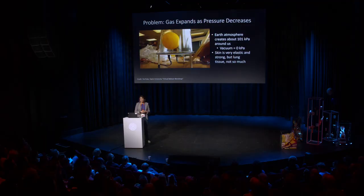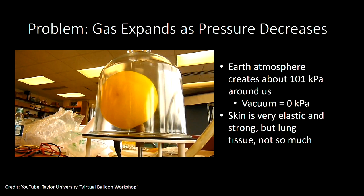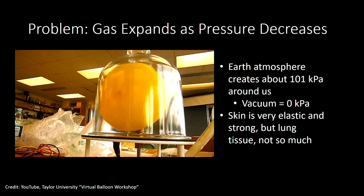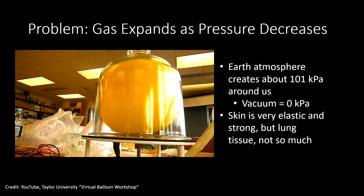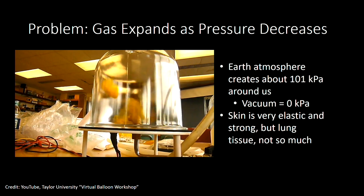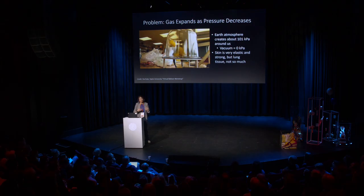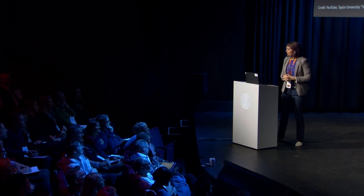So as we build our spacesuit, we provide that oxygen environment around you so you can continue to do your job normally. The next problem in a vacuum is that gas expands as pressure decreases. Here on Earth, we have about 14.7 PSI around us all the time, and that keeps everything inside our body functioning normally. If we take that pressure away, all the gas trapped inside starts to expand. It's not like the movies — you won't see instant cellular explosion — but inside your lungs, the tiny alveoli that are exchanging gas begin to explode, making it really hard to breathe. So we provide pressure around your body to keep it constant so your body functions normally within the spacesuit.